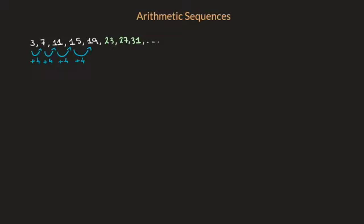The amount we always add is known as the common difference, and we usually refer to it with the letter D, as in difference. So for this sequence, the common difference D is equal to 4.